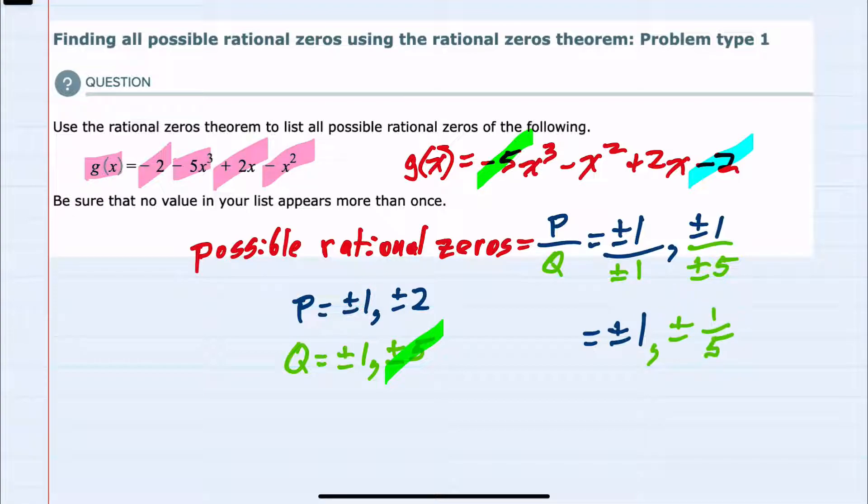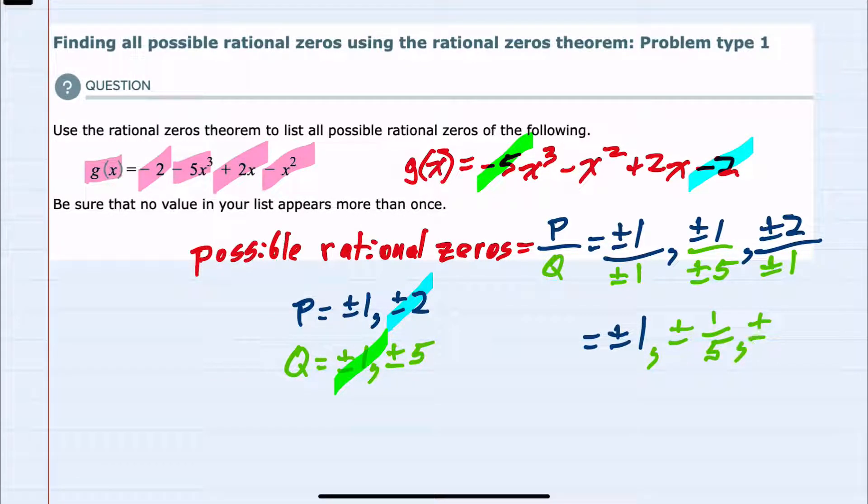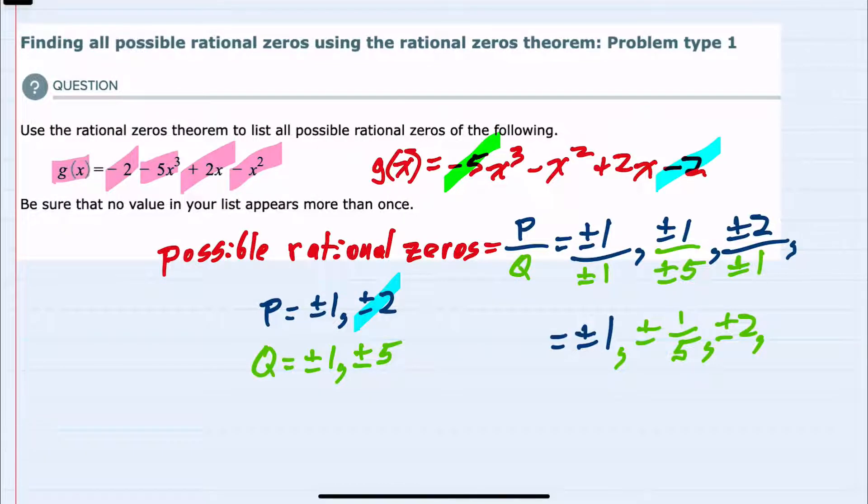So that covers both possibilities where p was 1, but p could also be 2. So we would have ±2 in the numerator and two options for the denominator. The first being ±1, which is just ±2.